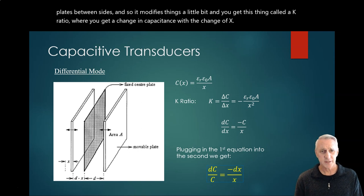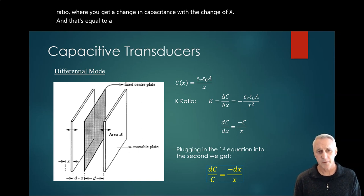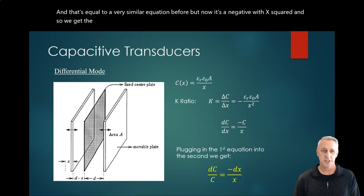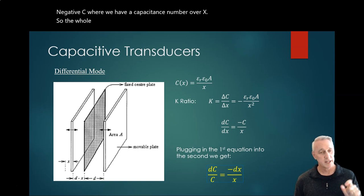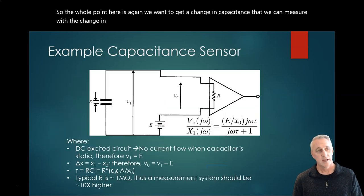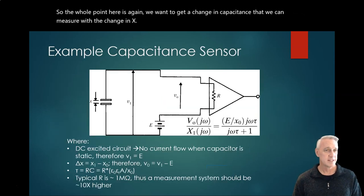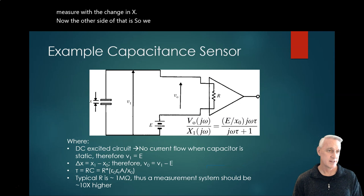And that's equal to a very similar equation before, but now it's a negative with x squared. So we get the change of capacitance with change of x is a negative c, where we have a capacitance number over x. So the whole point here is we want to get a change in capacitance that we can measure with a change in x. Now the other side of that is, okay, so we have a change in capacitance - great.